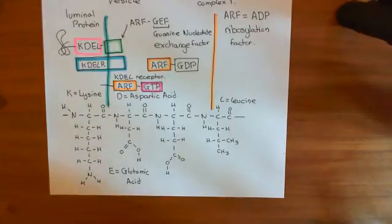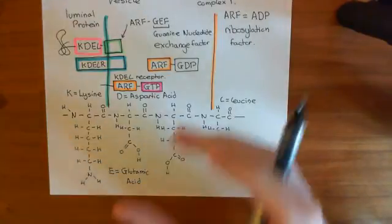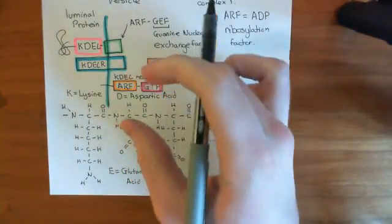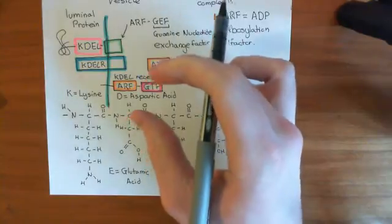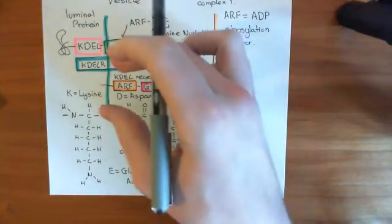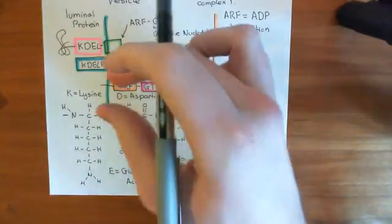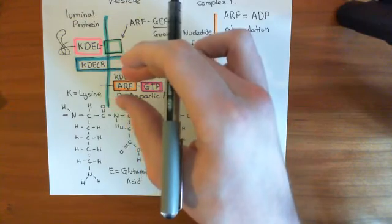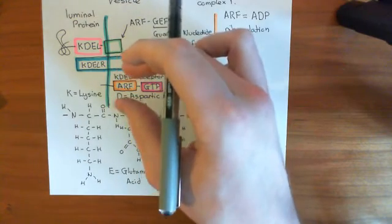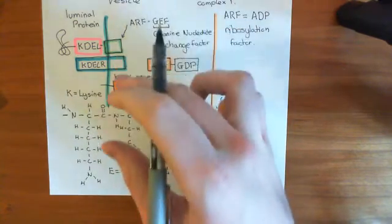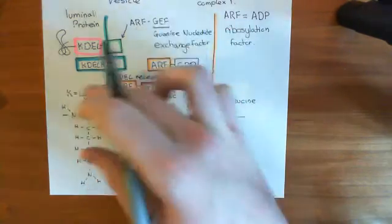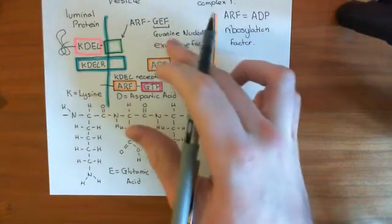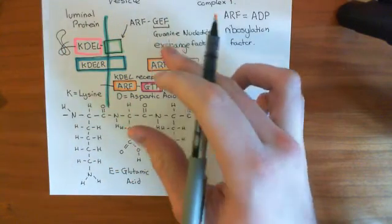Now what's going to happen is that COP1 protein complexes are going to come and bind to the ARF-GTP that's in the membrane of the cis-Golgi, nearby this KDEL receptor and this ARF-GEF.